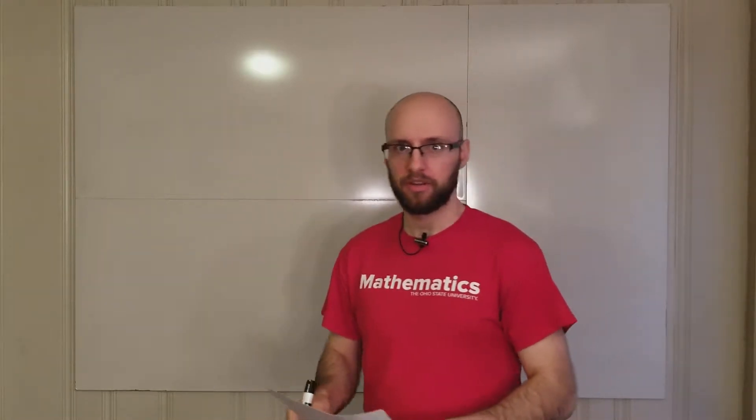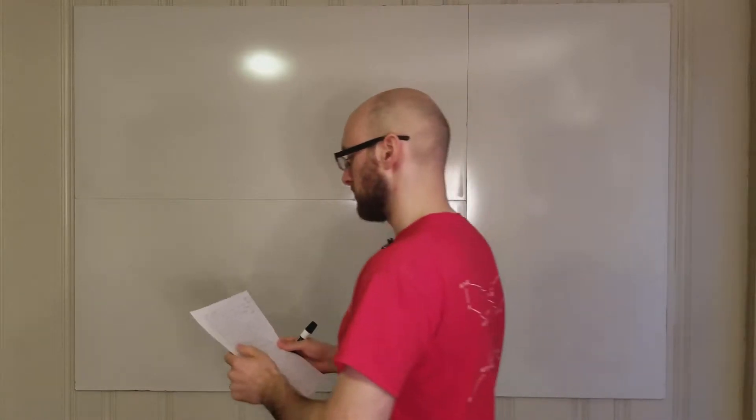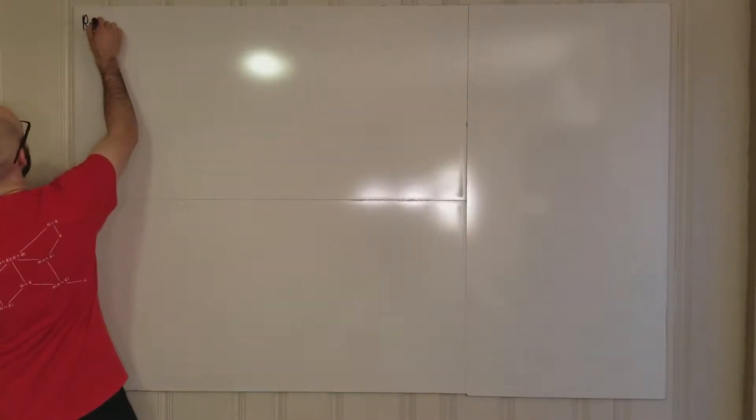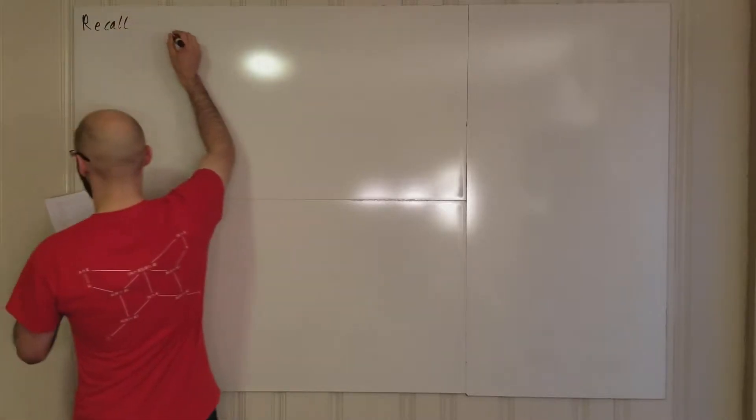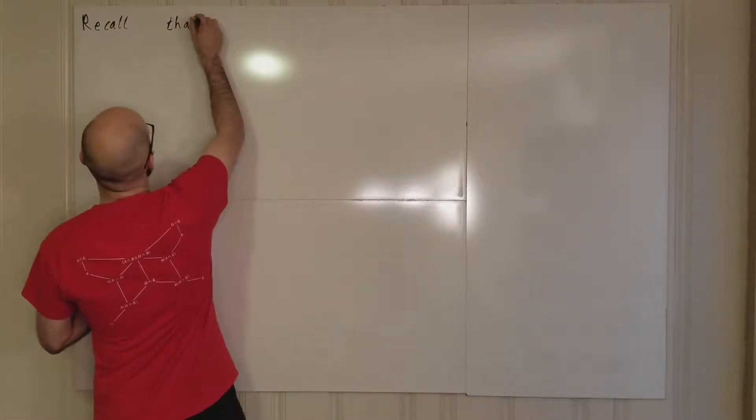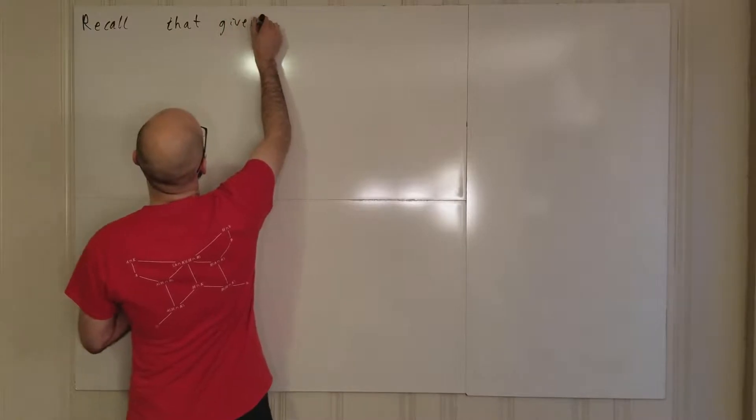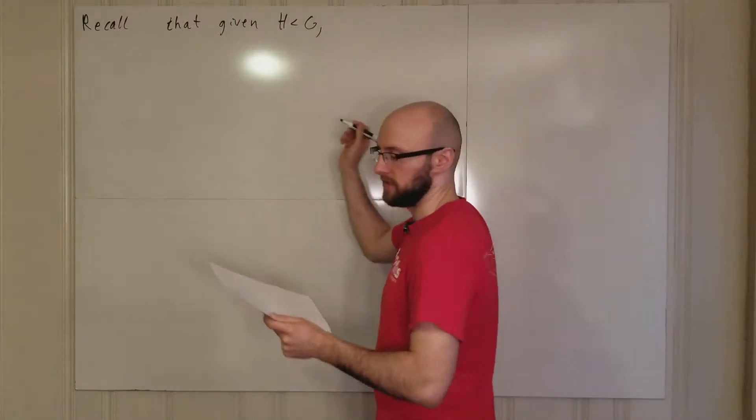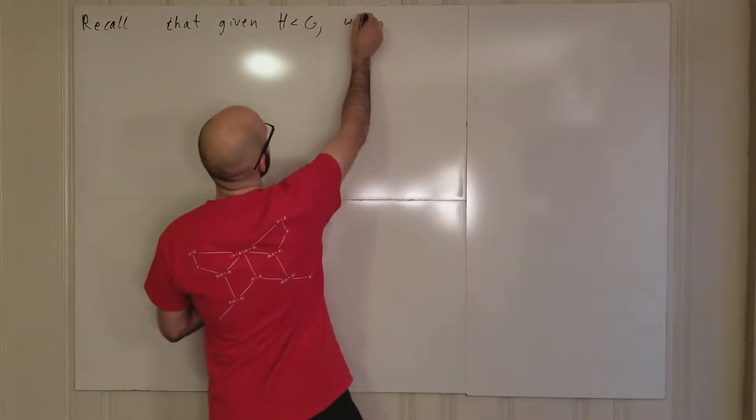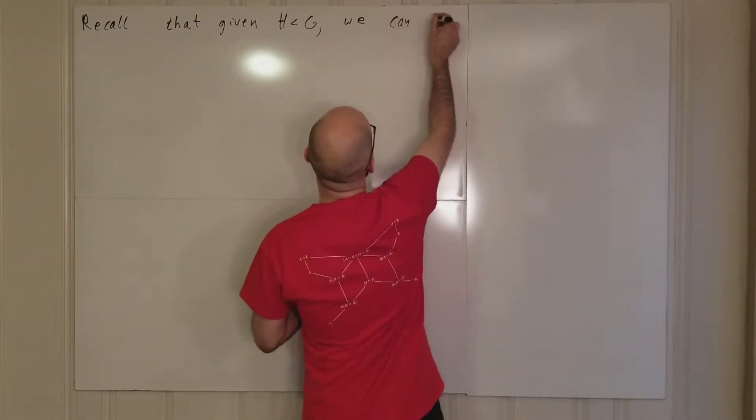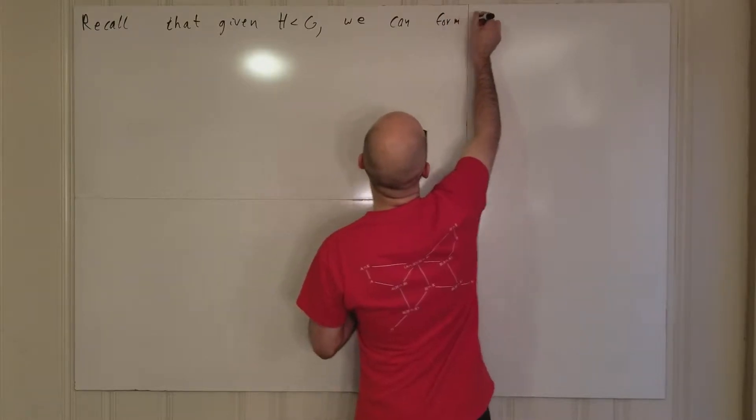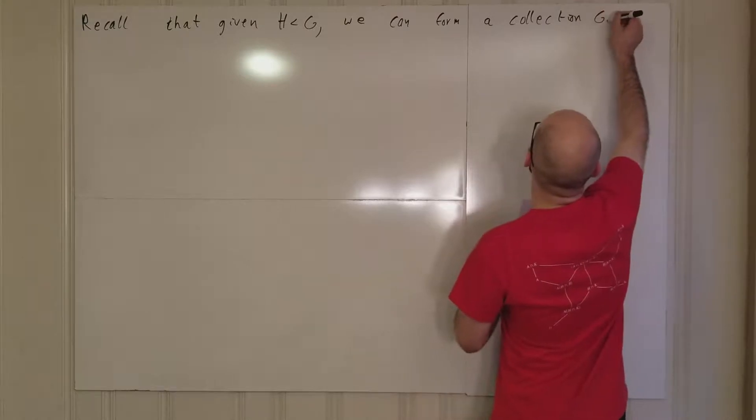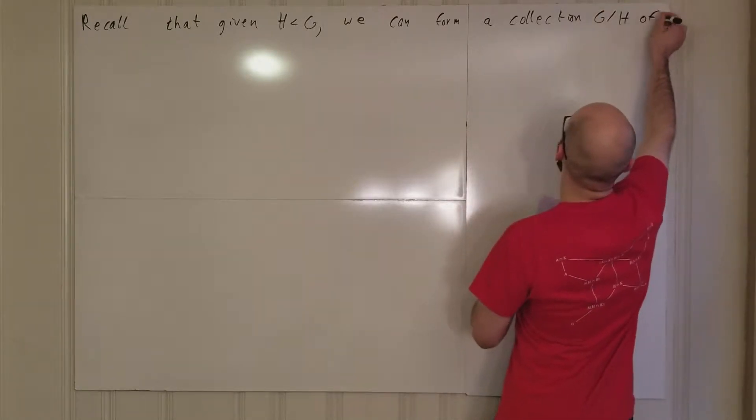Let's start with another lecture. Recall that given any subgroup H of G, we can form cosets. We can form a collection G/H of cosets.